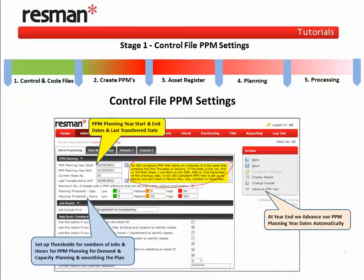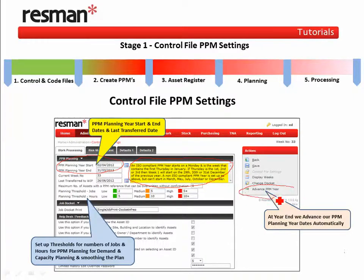We set the start and end dates each year, and these dates are initially set up for you by ResMan support staff, and they're located here. Over here, we have an option in the Actions area — Advanced PPM Year — which is used at year-end to automatically calculate our new PPM planning year and week numbers.